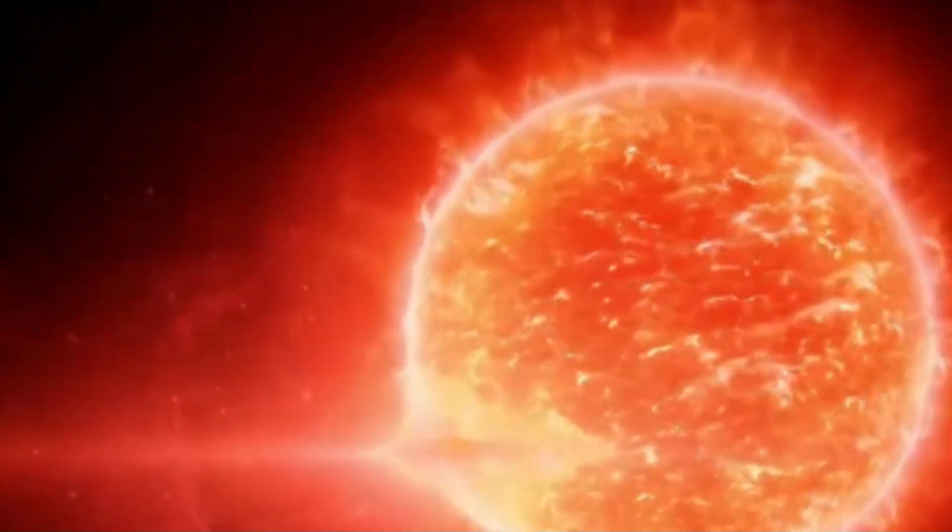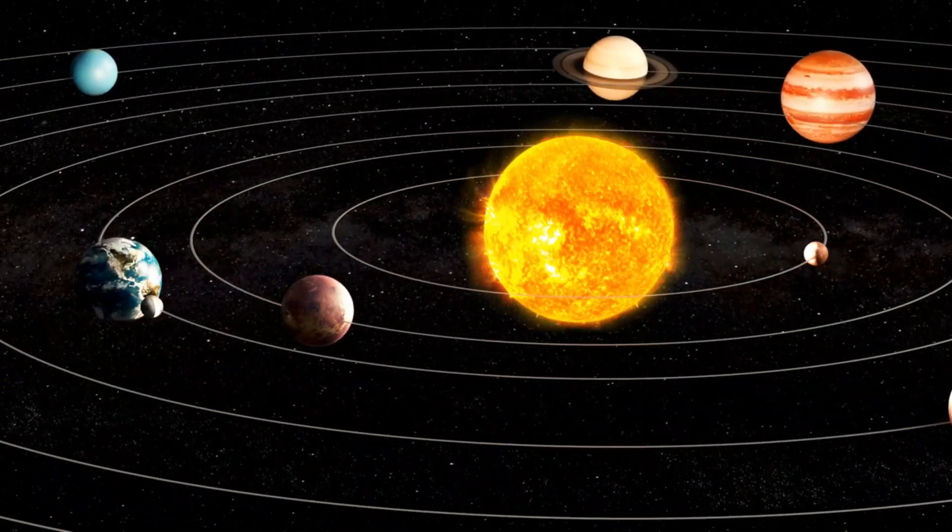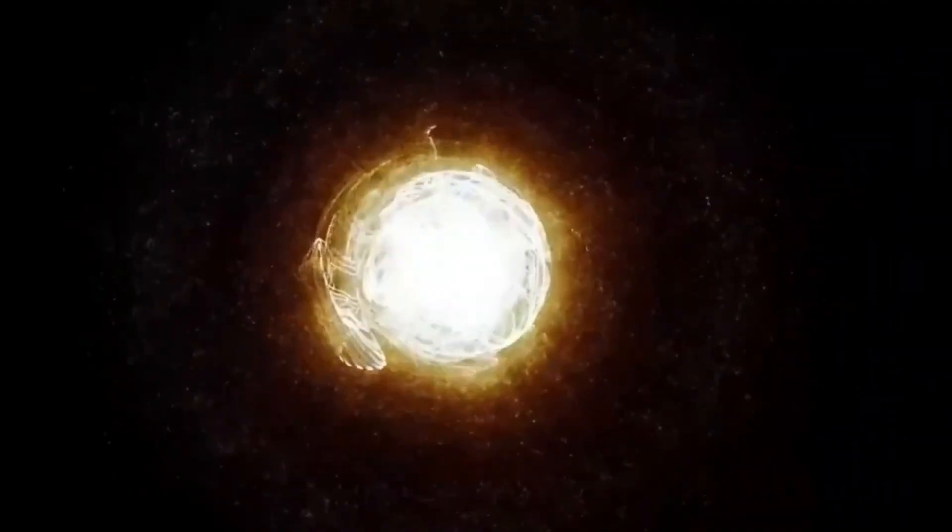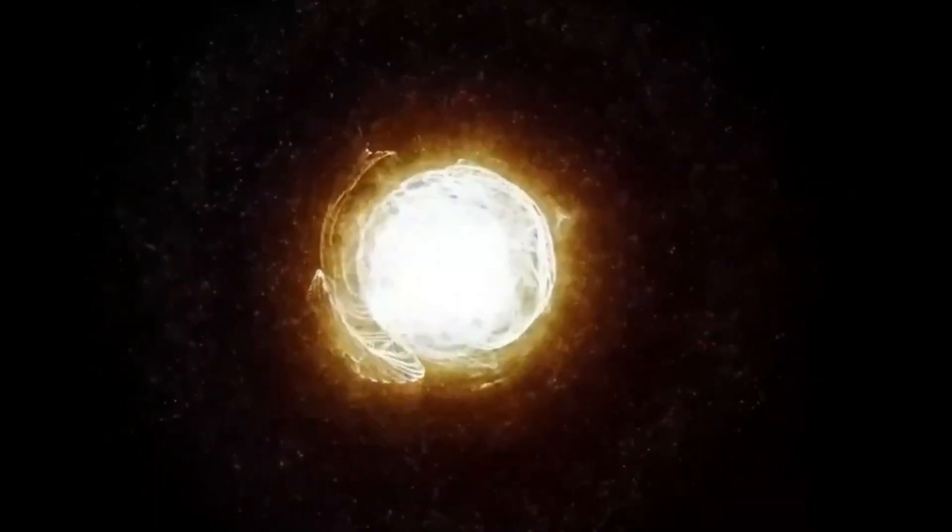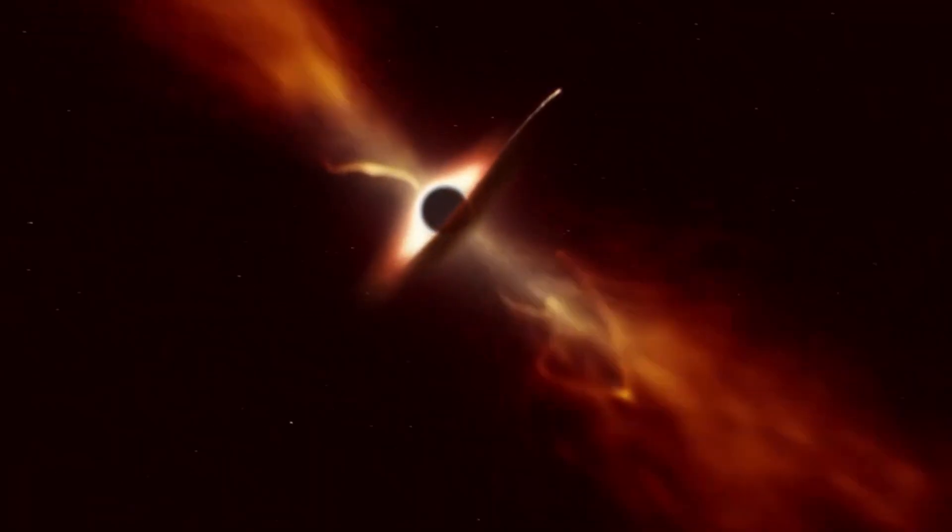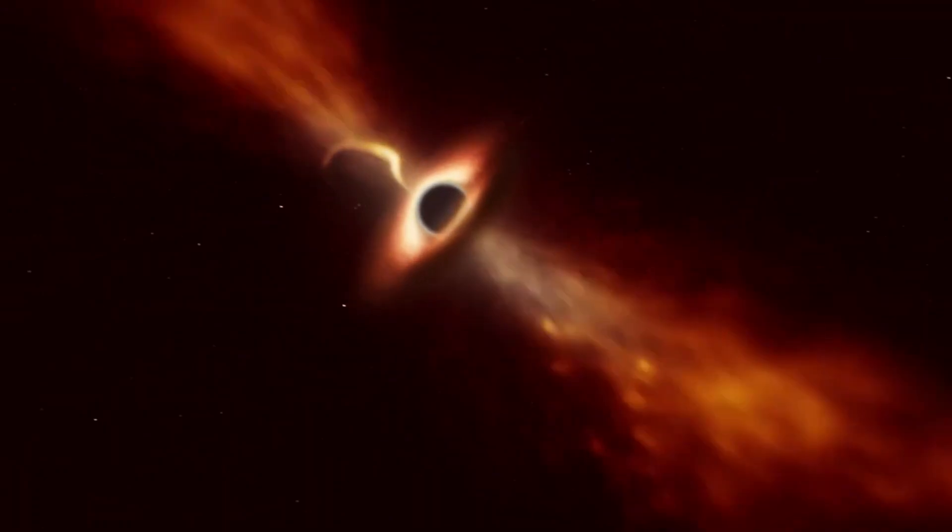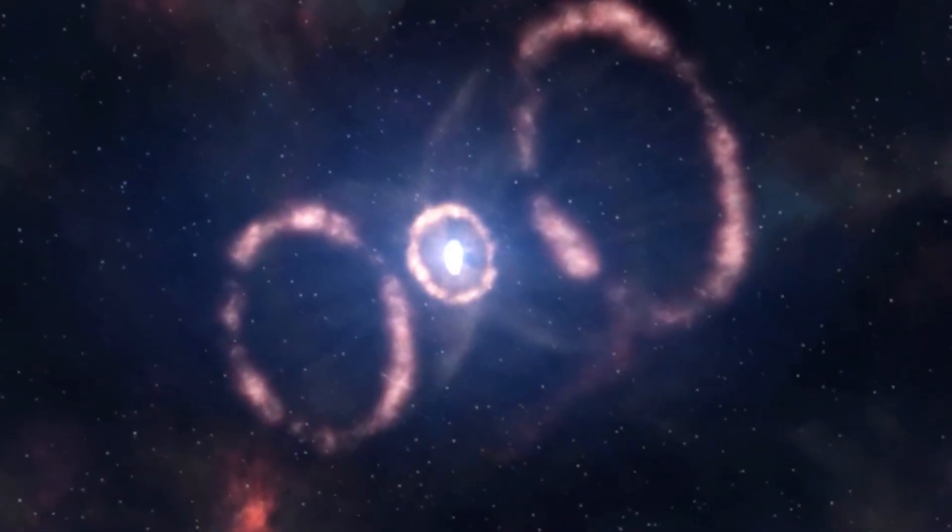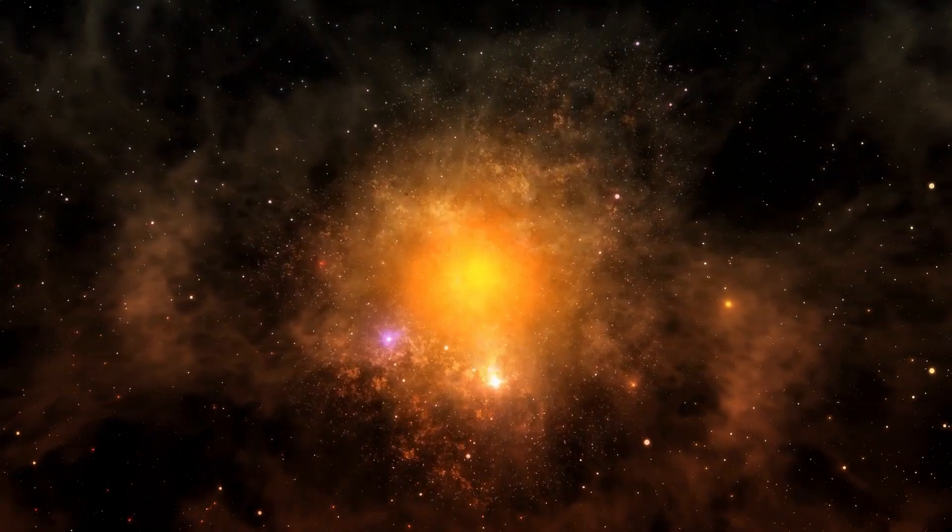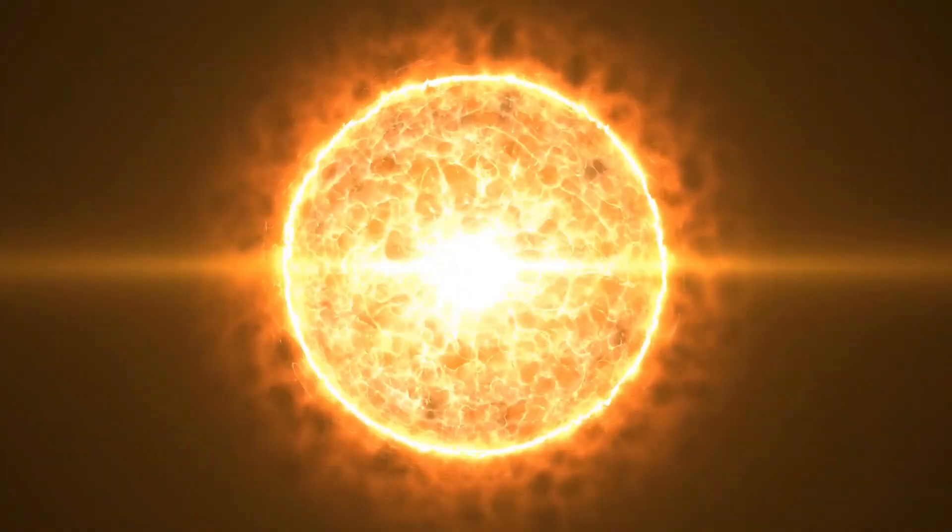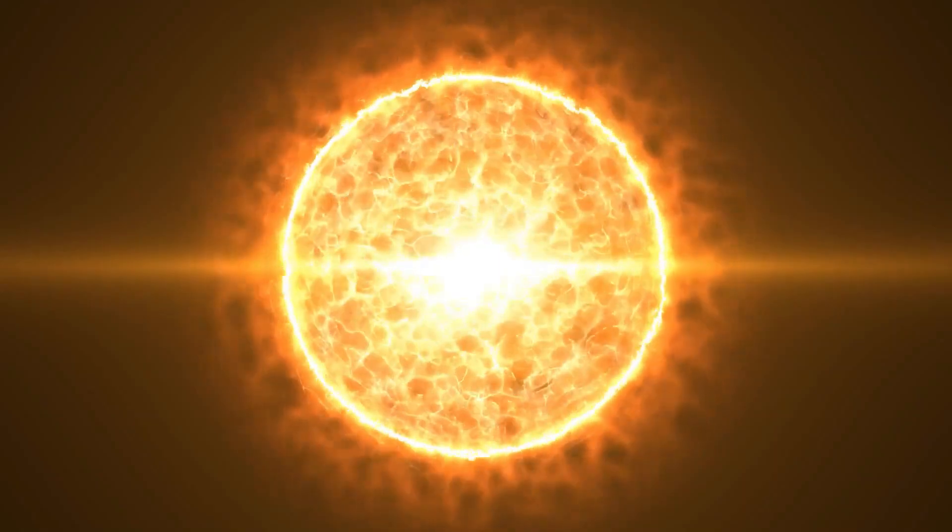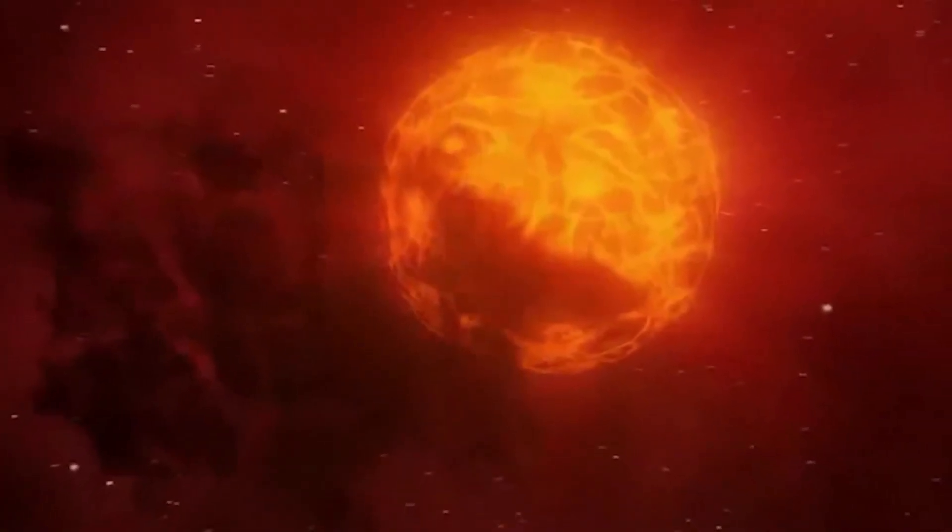A supernova is when a star explodes with a lot of light. It can happen when a white dwarf is set off into runaway nuclear fusion or when a huge star is nearing the end of its life cycle. Either the first object, which is called the progenitor, falls apart into a neutron star or black hole, or it is destroyed and turns into a scattered nebula. A supernova can have a visual brightness peak that is about the same as a whole galaxy. After a few weeks or months this brightness starts to fade.